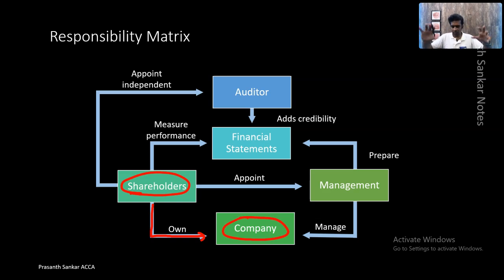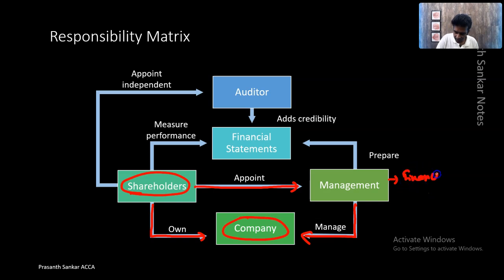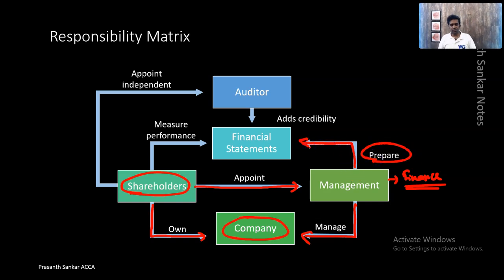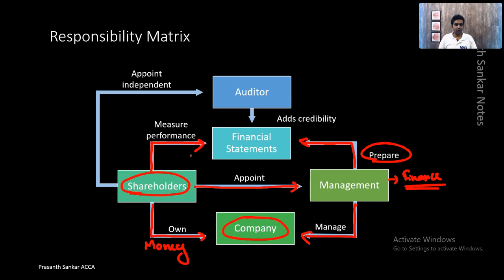The shareholders put their funds into the company, then they appoint management — like the CEO, CFOs, managers, sales director, finance director — who will run and manage the company. One part of the management is the finance team, which includes the CFO and the finance director. They will prepare the financial statements for the company, so that the shareholders who have invested their money can measure the performance of the company via those financial statements.